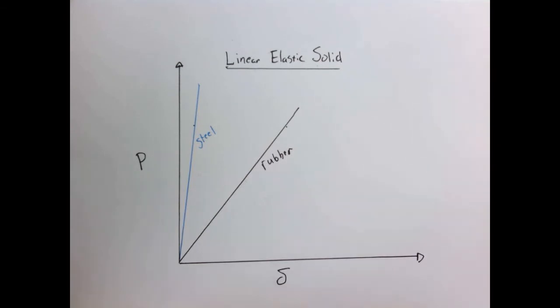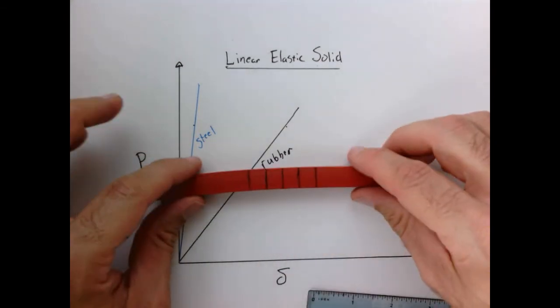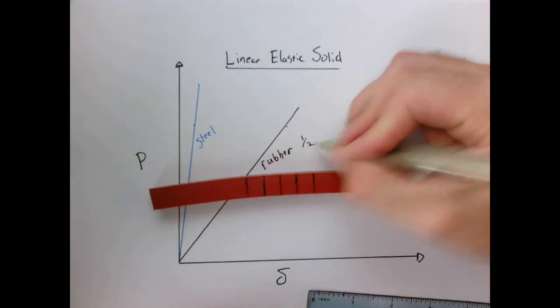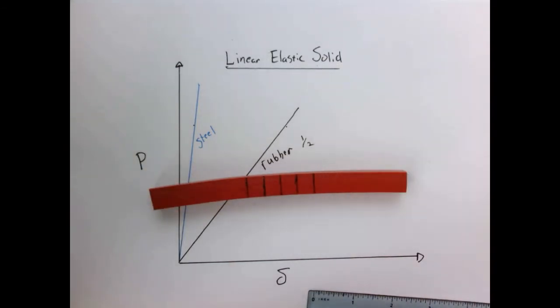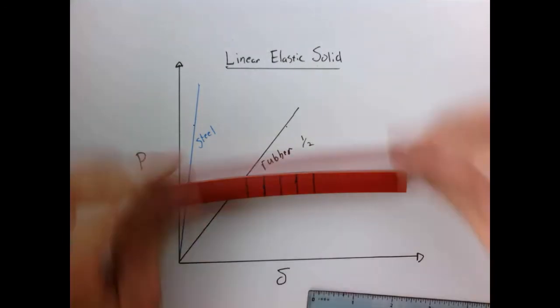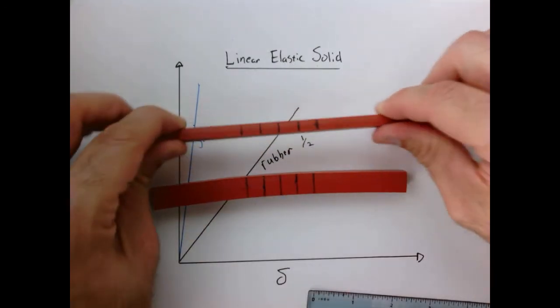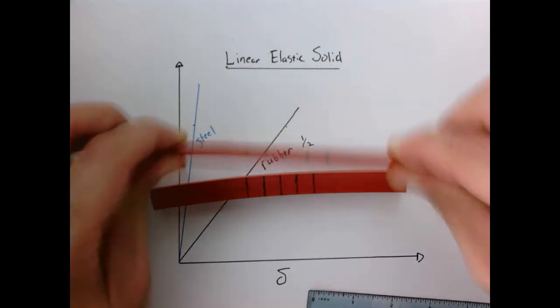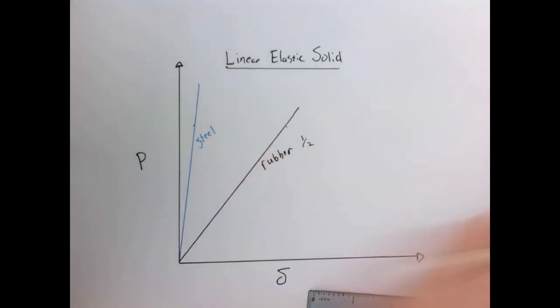The other dependency that's important is that of cross-sectional area. So here I have rubber and it's one half inch, and now if I take material which is smaller, so here I have a quarter inch, for the same load I ought to get quite a bit more displacement. So the slope should also change with the area.